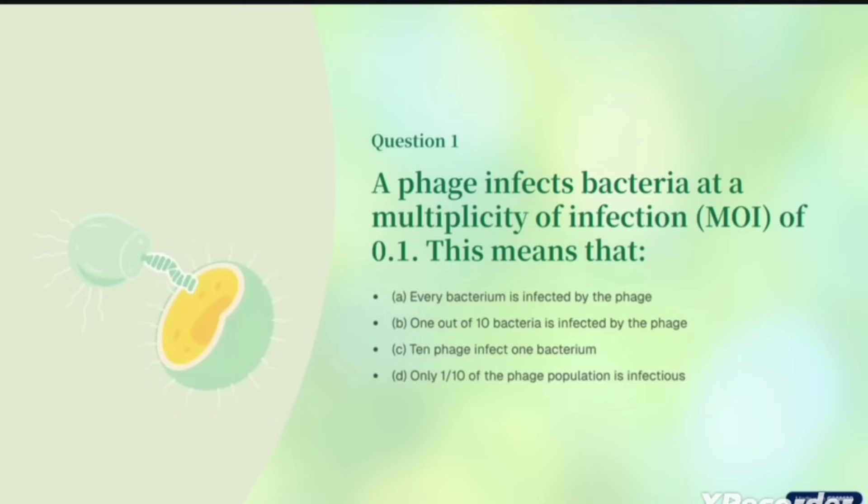First, understand what is MOI. MOI is the ratio of infecting phage particles to the number of bacteria present. For example, if we have 100 bacteria, on average about 10 phages will be present.